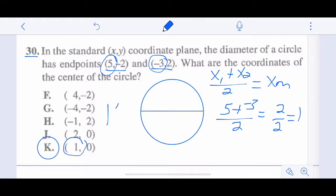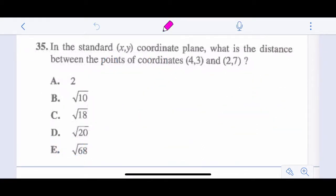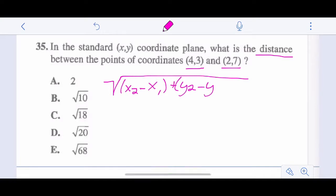What is the distance between the points of coordinates 4, 3, and 2, 7? The distance. So we're going to use the distance formula. So we're going to have X2 minus X1 squared plus Y2 minus Y1 squared. And we're going to take the square root of all of that. So we have 4, and we have 2 for our X coordinates. So we have 4 minus 2. These are squared.